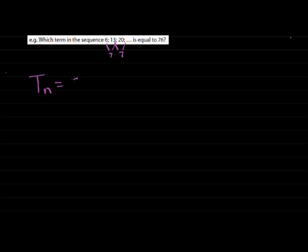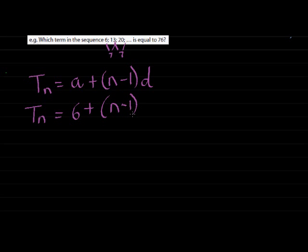General term is equal to alpha, the first term, n minus 1 times d for constant difference. Alpha being my first term, in this case it's 6. And n minus 1, remember we are trying to find the general term, we don't want the value for n as of yet.